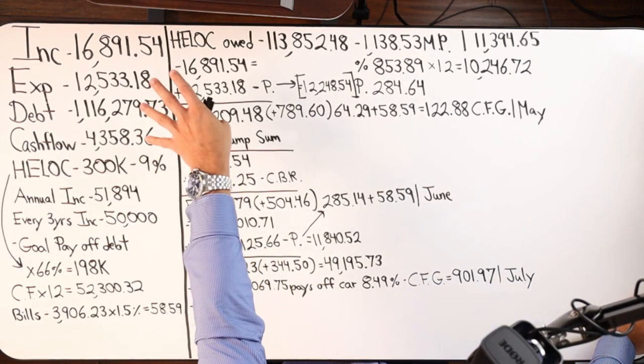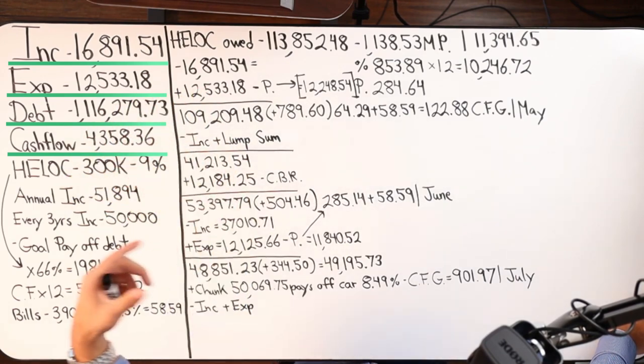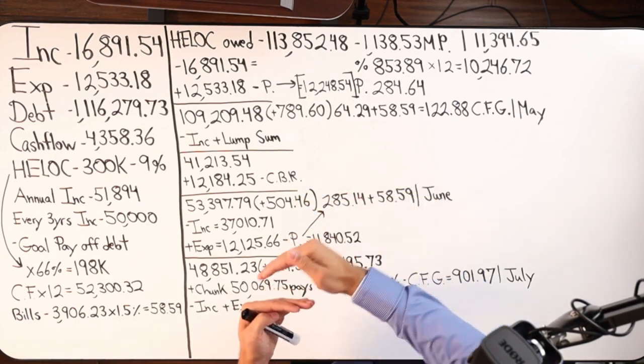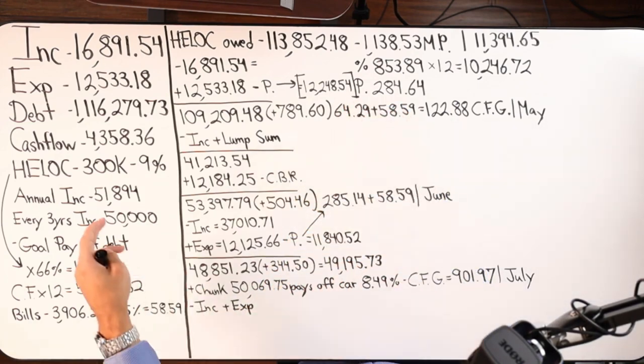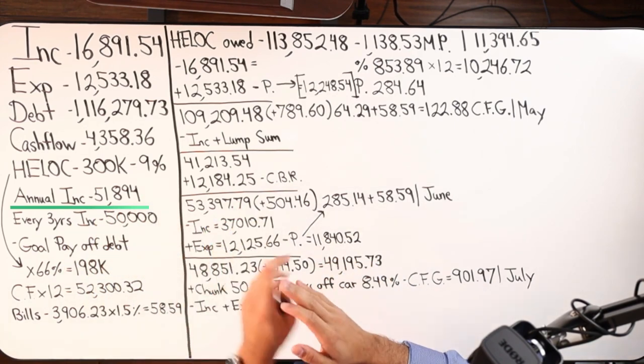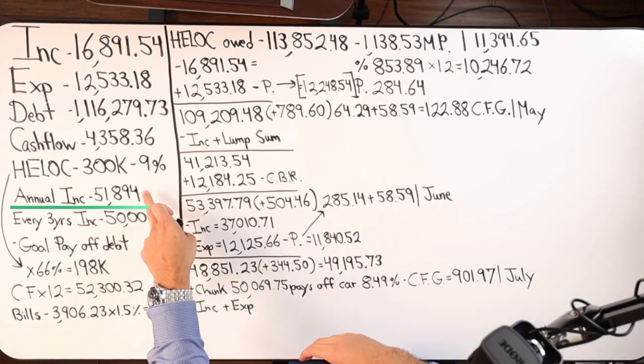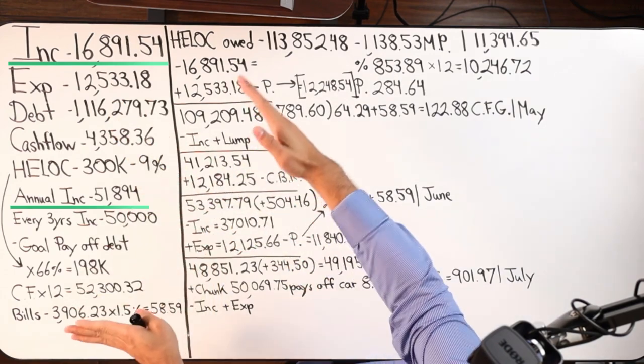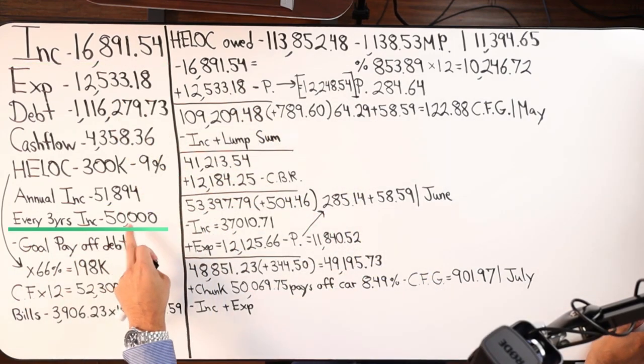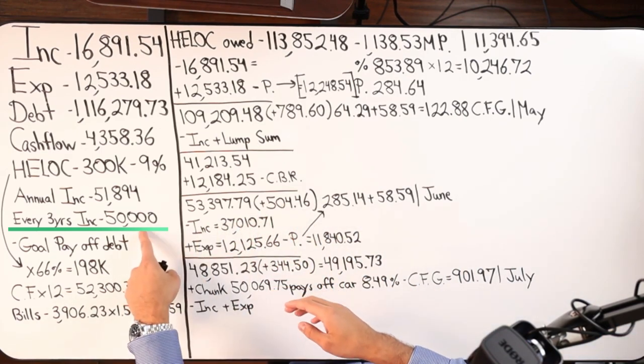So in addition to their four major numbers of what's coming in, what's coming out, cashflow and debt, they also have an annual lump sum income that comes in from an annuity, I believe. And it is $51,894 that gets paid out once a year, every single year. So $51,894. I did not add that into this number. I've just separated it on purpose. And then every three years, they receive $50,000.